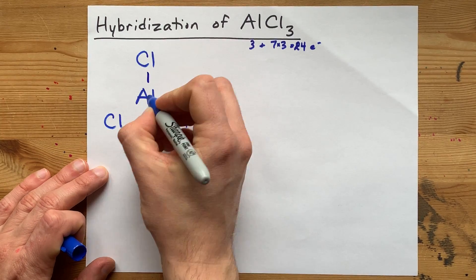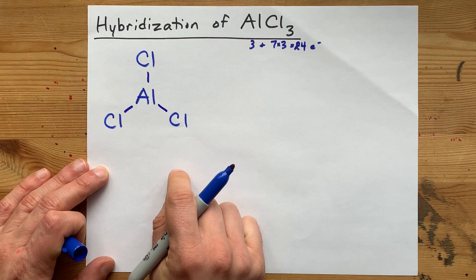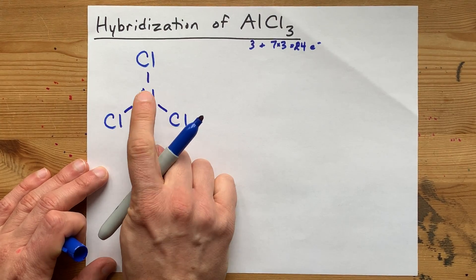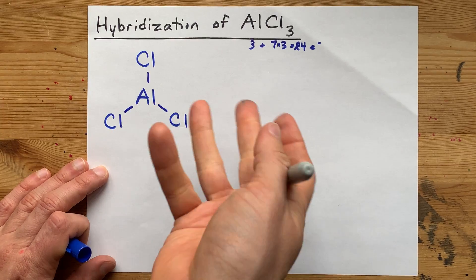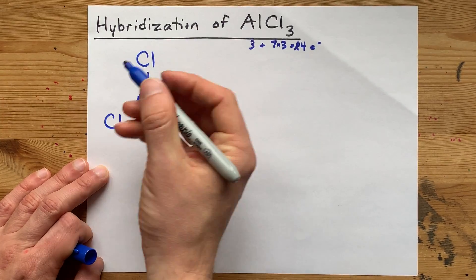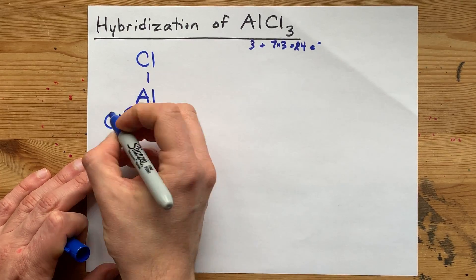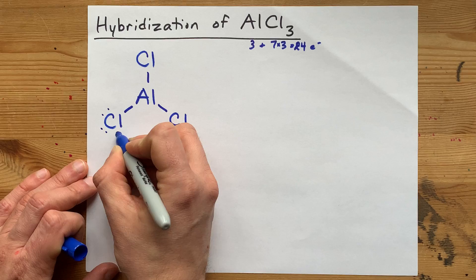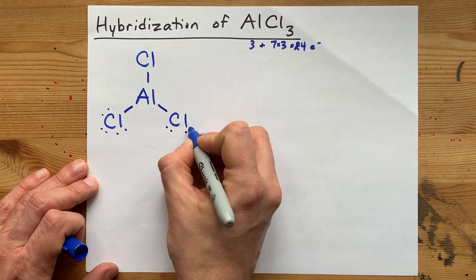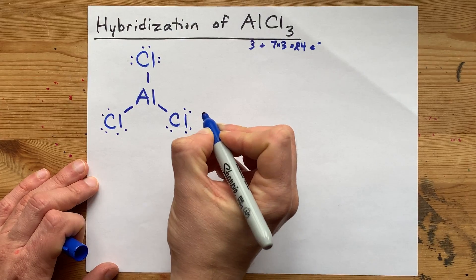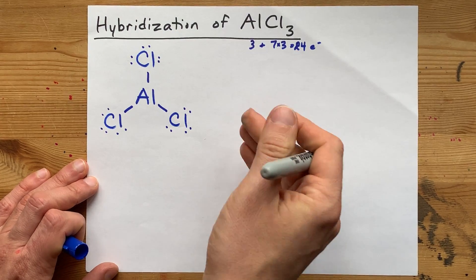Now I'm going to bond two, four, six electrons just to connect my outer atoms with my inner atom. Otherwise it wouldn't be a molecule. And then I'm going to fill the octet on the outer atoms. That was two, four, six electrons already. Eight, ten, twelve, fourteen, sixteen, eighteen, twenty, twenty-two, twenty-four. That's all the electrons I'm allowed to use.